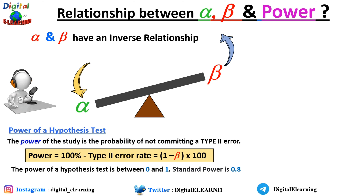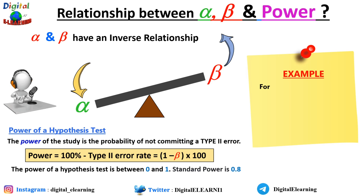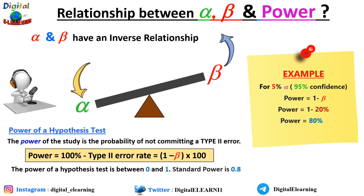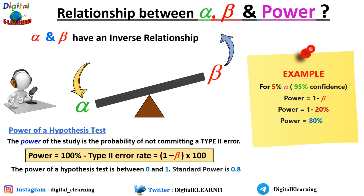Let's take an example. For a 5 percent alpha, that is 95 percent confidence, my power would be 1 minus beta. In this case, we get 1 minus 20 percent, which is 80 percent power. That is how you calculate power, and that is the relationship between alpha, beta, and power.